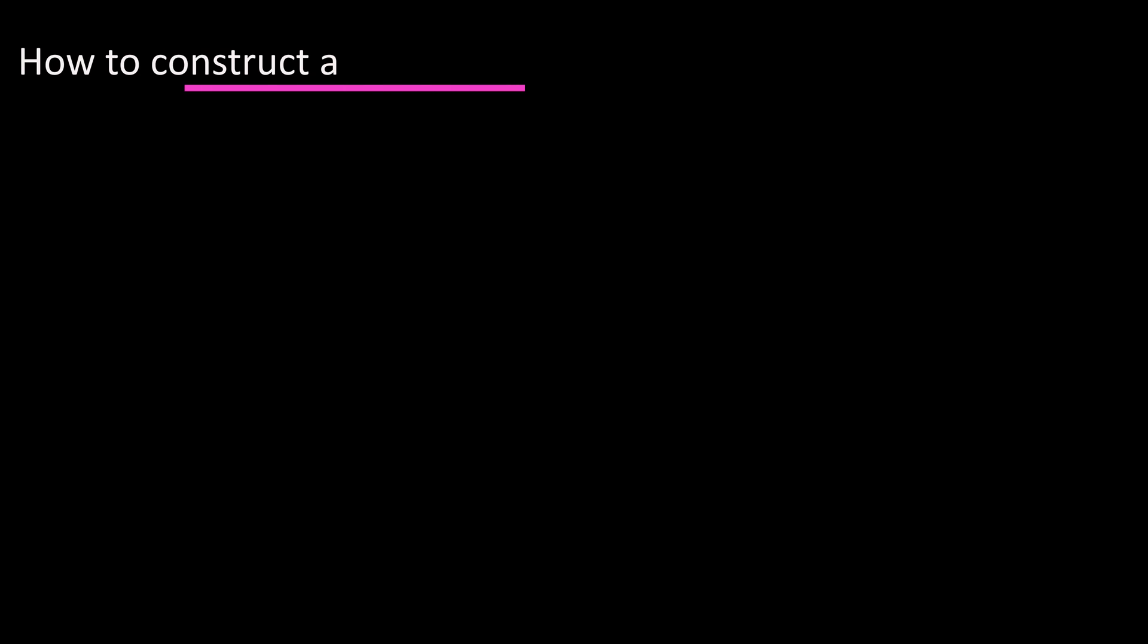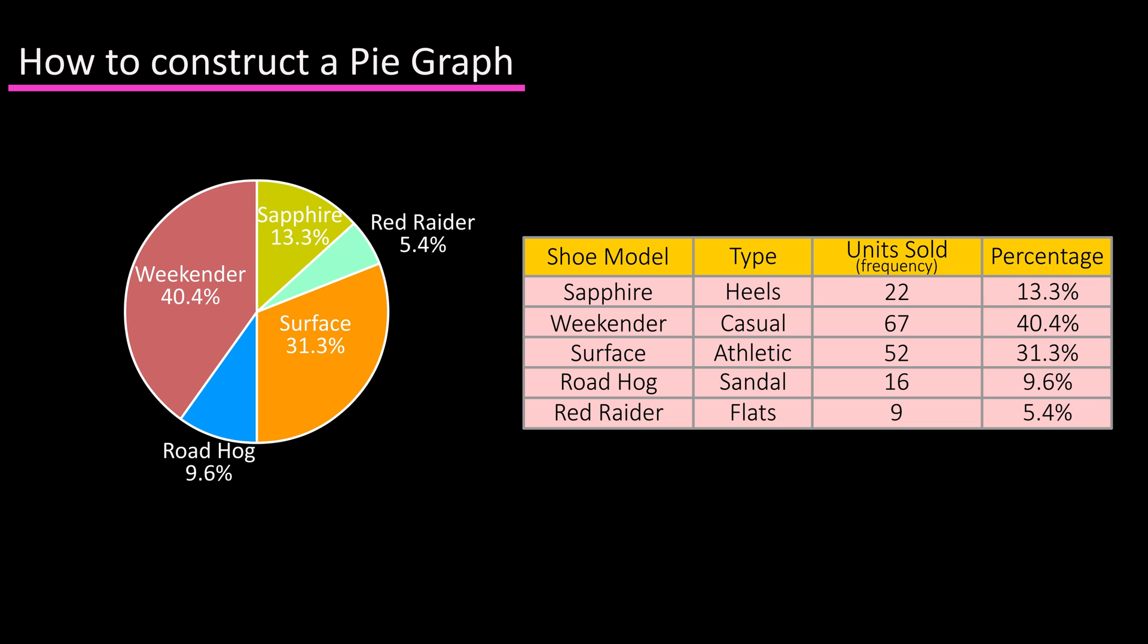In this video we're going to discuss what a pie graph is and how to construct a pie graph. A pie graph is a circle that displays the percentages of frequencies for each category for a given set of data.